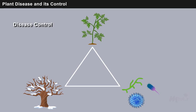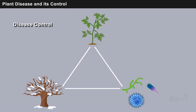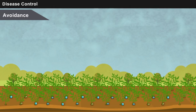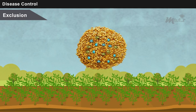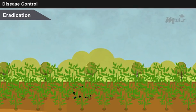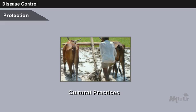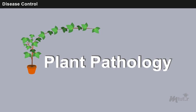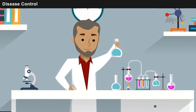Disease control strategies can focus on breaking a leg of the triangle. Success in controlling a plant disease can be achieved by combining the following principles: Avoidance, in which plants are grown at times when the pathogen is inactive or not present; Exclusion, in which the pathogen or infected plant material is excluded from crop production areas; Eradication, which eliminates the pathogen after it is established or eliminates the plants that carry it; and Protection, which involves modifying the environment, cultural practices, or using chemicals to protect plants from diseases or control the vectors that cause them.